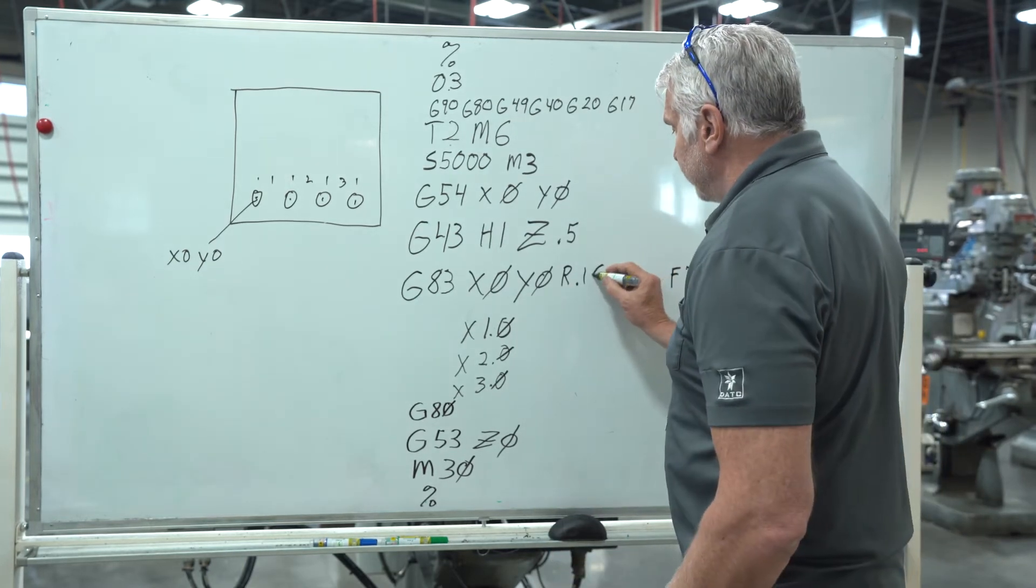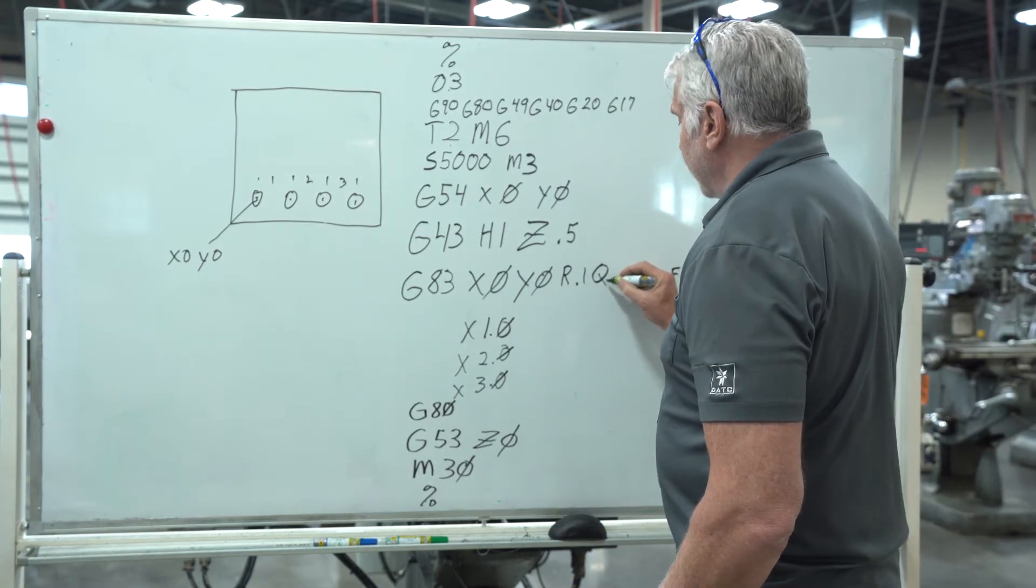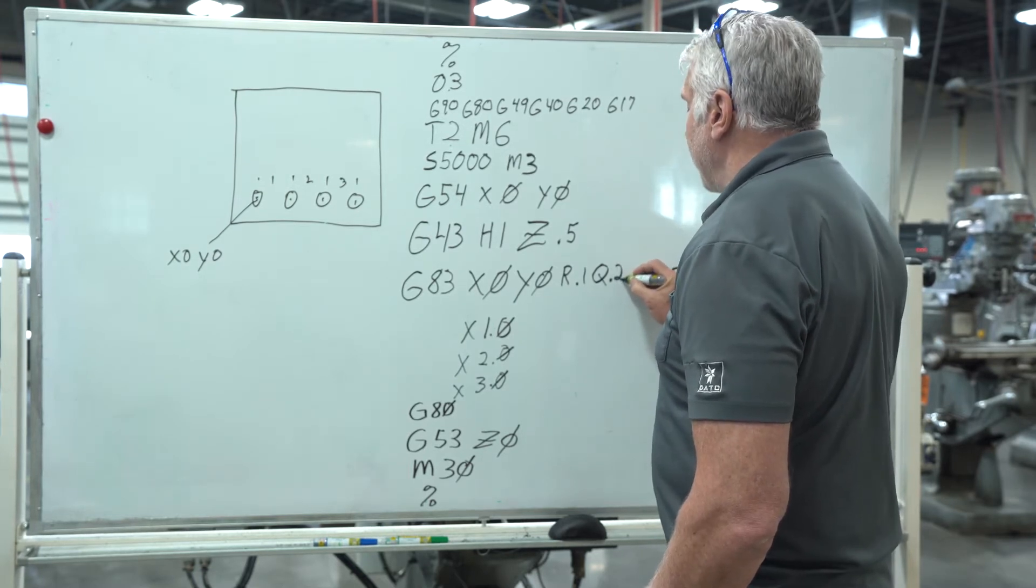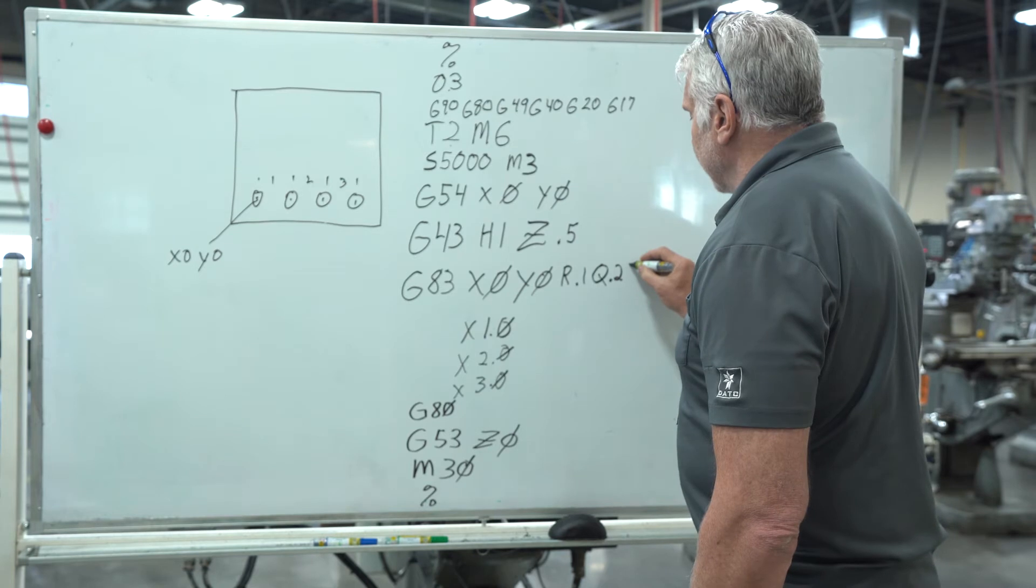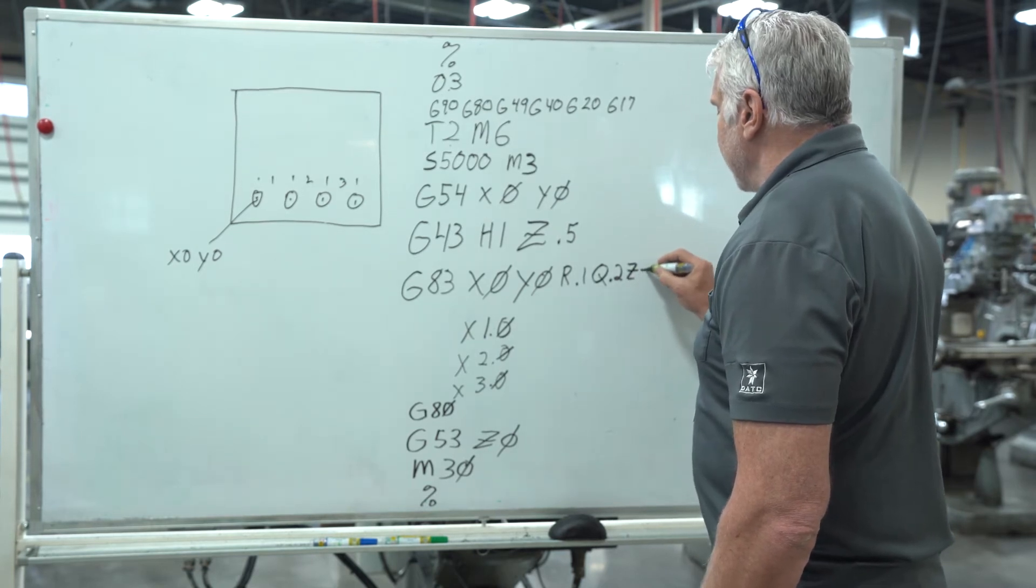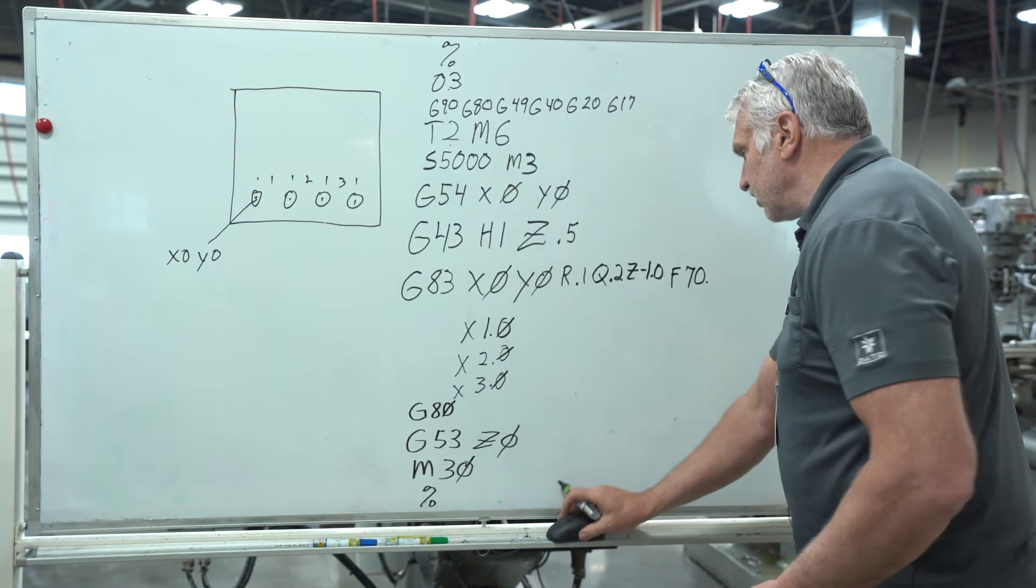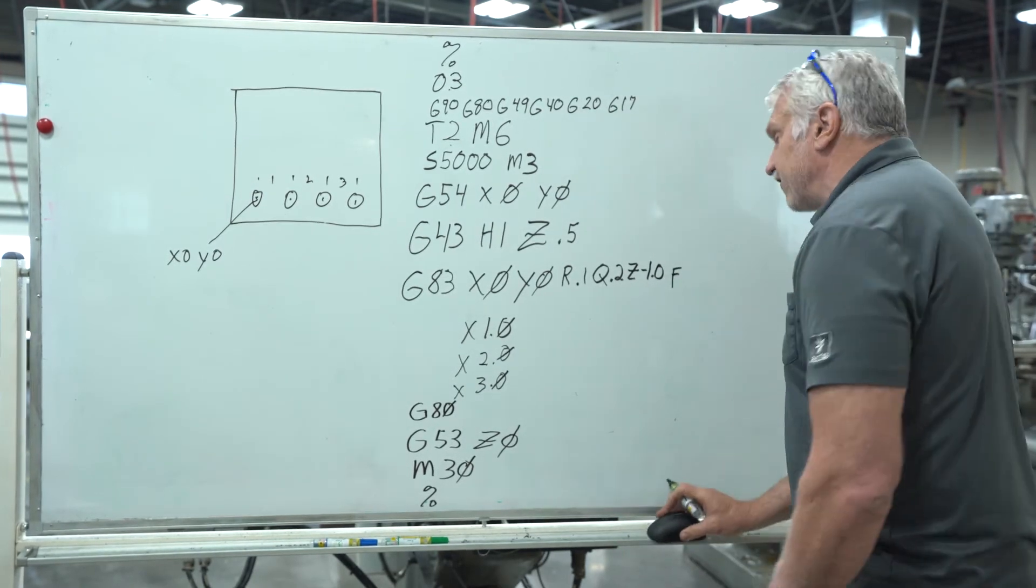To peck it's a Q value. So we have a Q and I want to peck let's say two hundred thousandths each peck. And we're going to go to a Z of negative one inch. Instead of 70 inches a minute let's say we're doing this at 50 inches a minute.